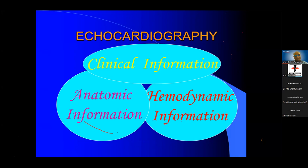Now, coming to echocardiography. There are three important things: clinical information, anatomic information, and hemodynamic information. Clinical information is extremely important. It will not take more than one minute — take a brief history. Suppose a patient comes with dyspnea on exertion: that gives you information. Suppose the patient comes with palpitation, or edema feet. A brief clinical information, followed by ECG, X-ray, and auscultation.